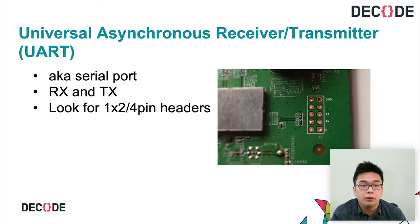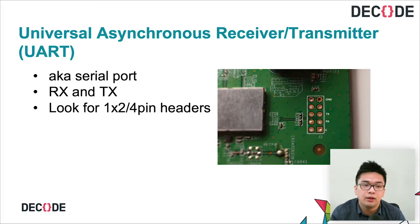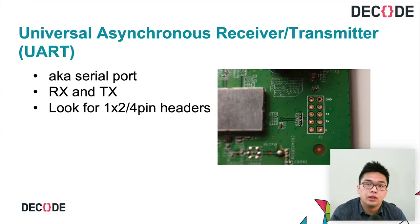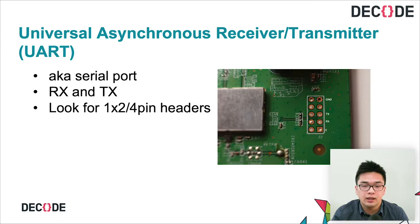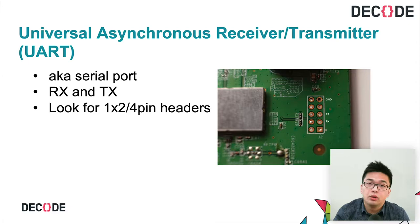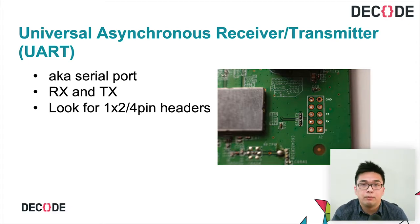On this same router, it also has UART — Universal Asynchronous Receiver Transmitter. Asynchronous means this protocol does not require a clock signal, which is why it technically only needs two pins: RX and TX, standing for receive and transmit. To find it, again read the datasheet or look for 1x2 or 1x4 pin headers on the PCB and try them out.